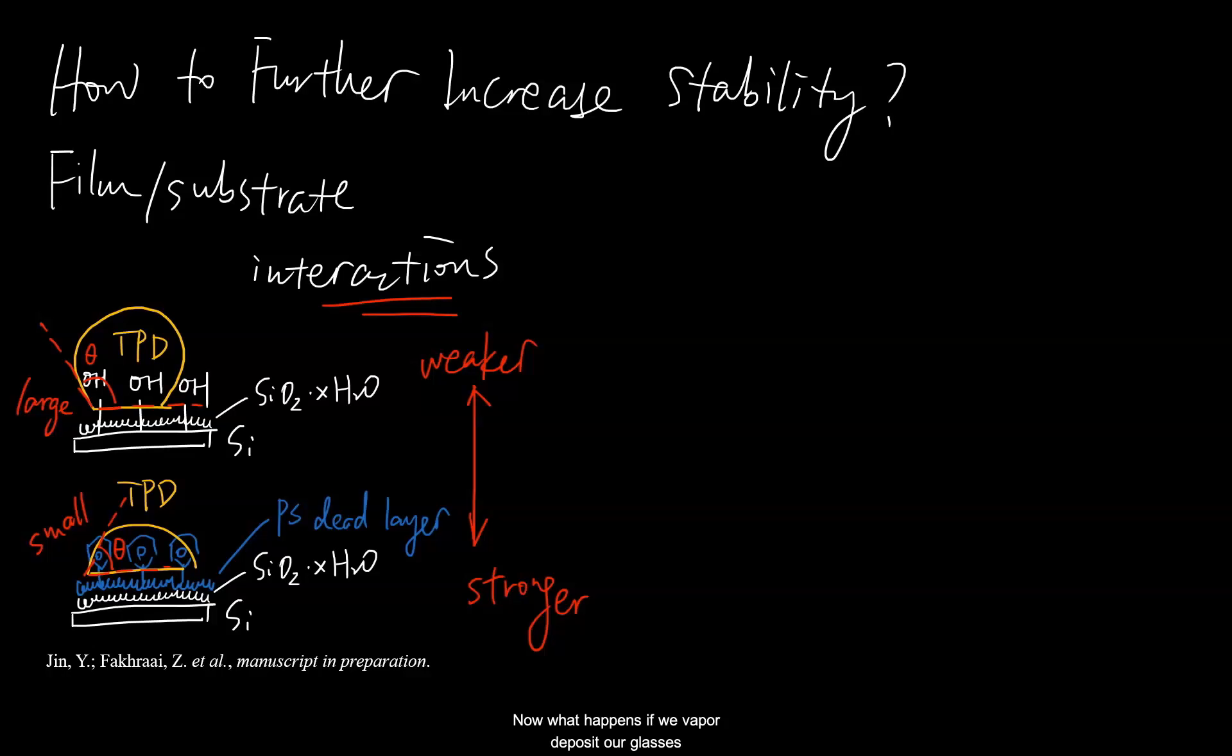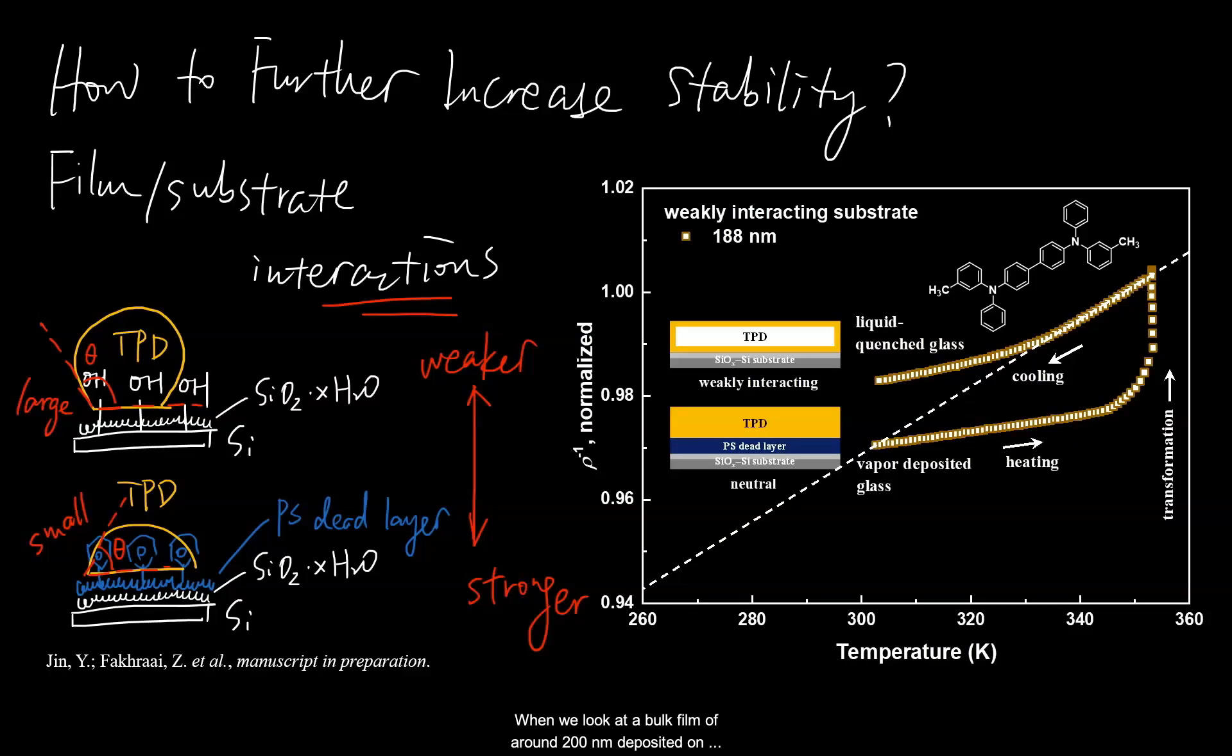Now what happens if we vapor-deposit our glasses on polymer substrates instead of silicon substrates? Here's some data I have that shows the difference. When we look at a bulk film of around 200 nanometers deposited on a weakly interacting substrate, and perform a heat and cool cycle to transform the vapor-deposited glass to liquid quenched glass, this is what the process looks like.